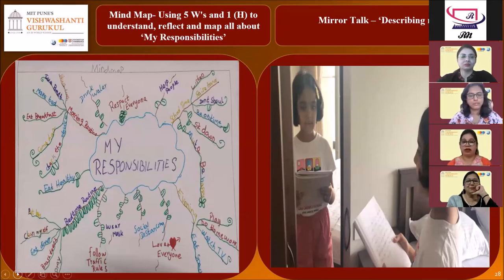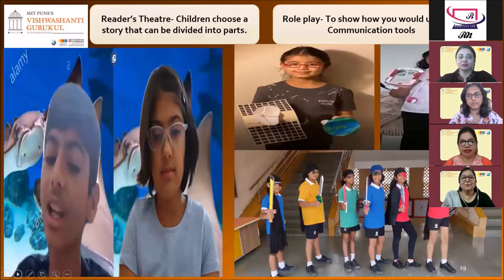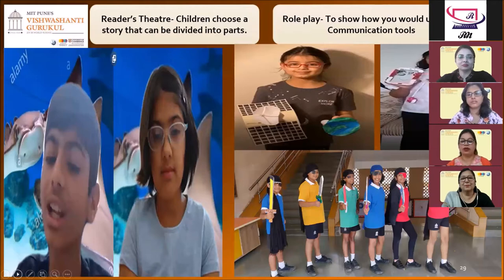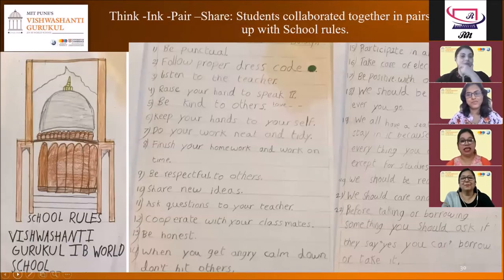The next picture is mirror talk — looking into a mirror, using adjective words, the students had to describe themselves. Going further, we have reader's theater. Reader's theater helps readers learn to read aloud with expression and builds reading confidence. Through a role play, students learn to express themselves and to describe the features used in the communication tool. In the next picture, students did a role play of pirates in the unit of exploration. We also have think, ink, pair, and share, which comes under instructional writing — students collaborated together in pairs and came up with their own school rules.